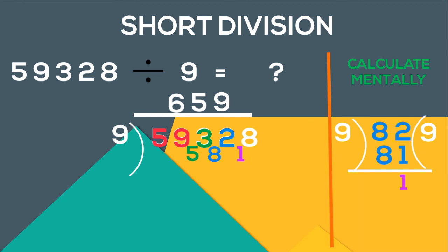We get 18. 9 goes 2 times in 18 without any remainder. Our final answer is 6592.